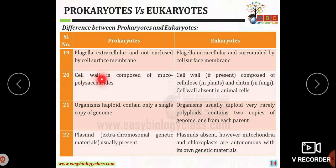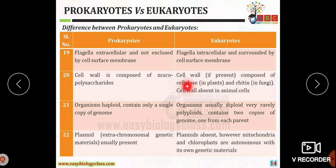The cell wall of prokaryotic organisms is composed of peptidoglycan (murein). In eukaryotic organisms, if a cell wall is present, it is composed of cellulose (for example in plants) or chitin (for example in fungi). Animal cells show the absence of a cell wall.